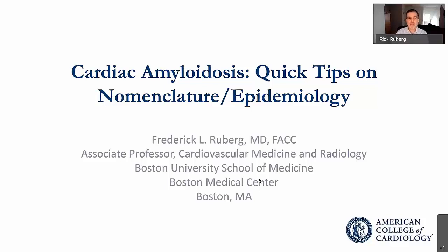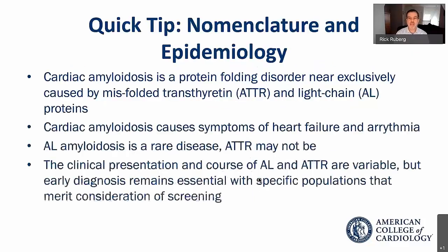Over the next 10 minutes, we'll talk about cardiac amyloidosis as a protein folding disorder. It's predominantly caused by either misfolded transthyretin protein or light chain. ATTR is the abbreviation for transthyretin protein, and AL is the abbreviation for light chain amyloidosis. Cardiac amyloidosis causes symptoms of congestive heart failure and arrhythmia primarily, but many other symptoms as well.